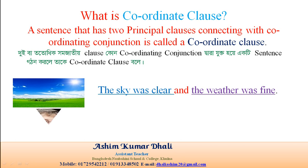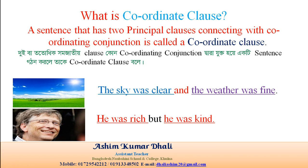Another example: 'He was rich but he was kind.' Here, 'he was rich' is a principal clause and 'he was kind' is also a principal clause. 'But' is the coordinating conjunction. So the sentence is a coordinate clause.